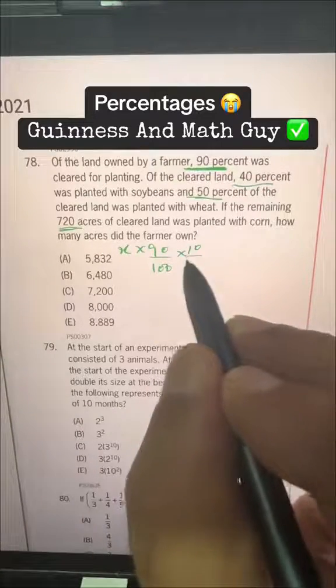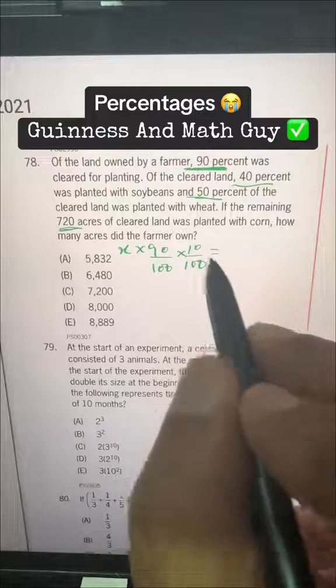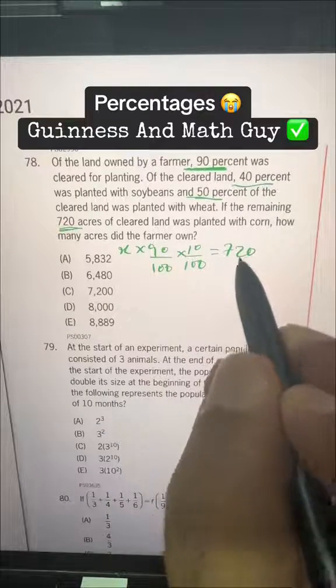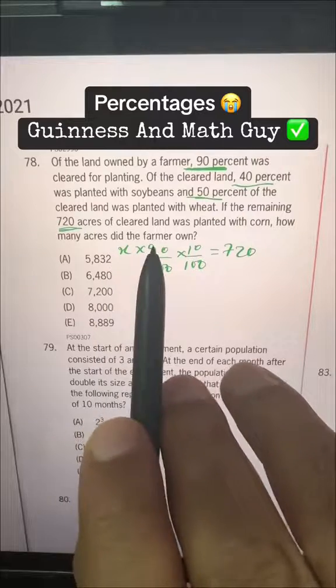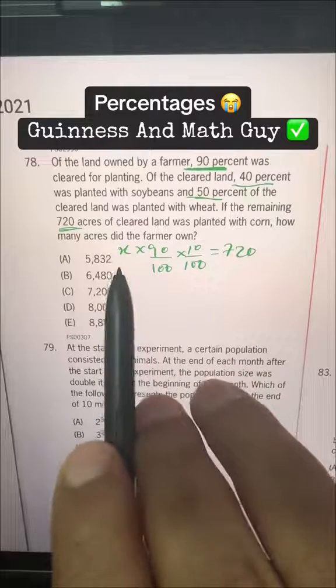So remaining 10% is 720. So how many acres did the farmer own? We need to find X.